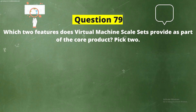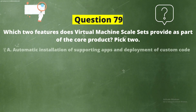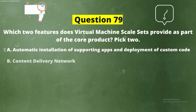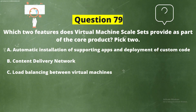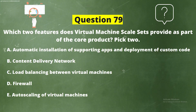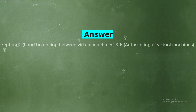Question 79: Which two features does Virtual Machine Scale Sets provide as part of the core product? Options: A) Automatic installation of supporting apps and deployment of custom code, B) Content delivery network, C) Load balancing between virtual machines, D) Firewall, E) Auto scaling of virtual machines. The correct answer is option C, load balancing between virtual machines, and option E, auto scaling of virtual machines.